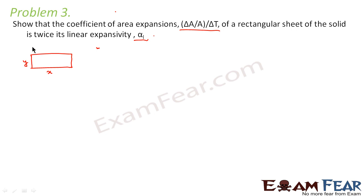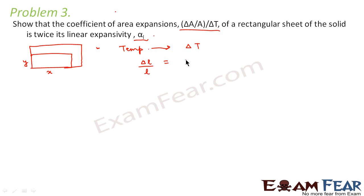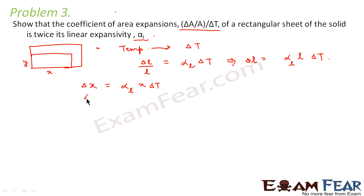Now let us suppose that it expands and reaches this shape. This additional area is the change in area due to the increase in temperature. We know that when temperature increases by delta T, the linear expansion is given by delta L by L equals alpha L into delta T, or delta L equals alpha L into L delta T. So delta X equals alpha L into X delta T, and delta Y equals alpha L into Y into delta T.